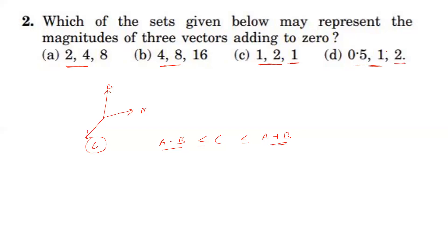Fourth option: the two vectors give maximum 1.5 and minimum 0.5, so 2 does not lie between them — cannot be in equilibrium. Summarizing: for options 1 and 2, the third vector does not lie between minimum and maximum. For the third option, the minimum of 1 and 2 is 1, maximum is 3, and the third vector lies within this range, so only the third option gives a resultant of zero.